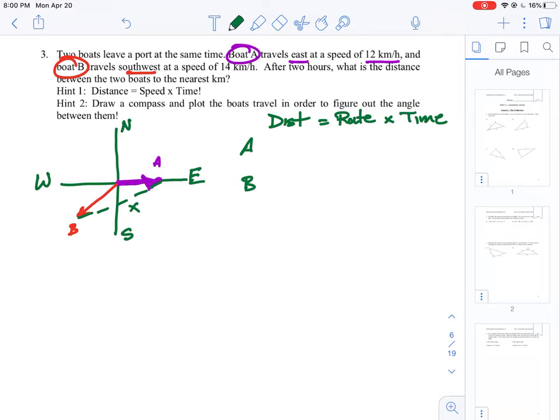How long has boat A been traveling? Well, it says in the question, after two hours what is the distance between the two boats? So each boat is traveling for two hours simultaneously.